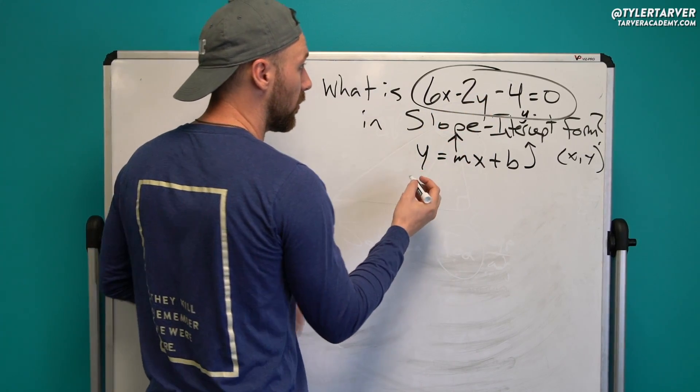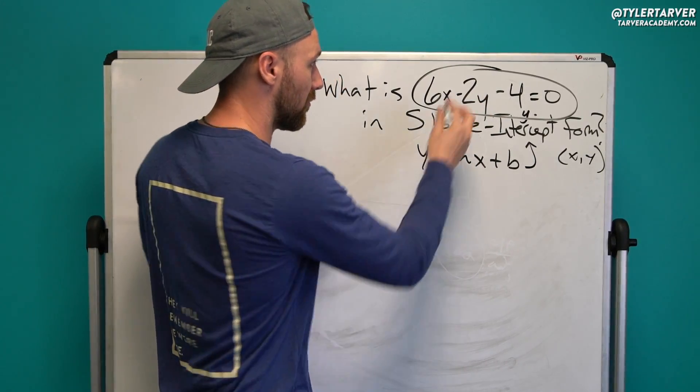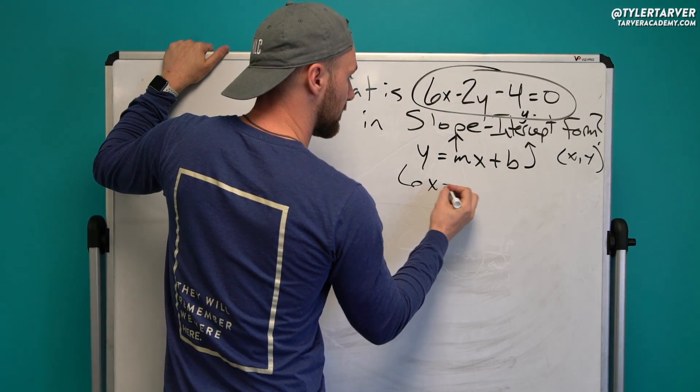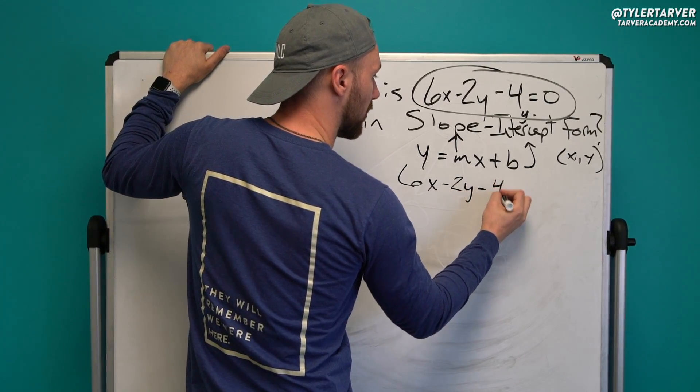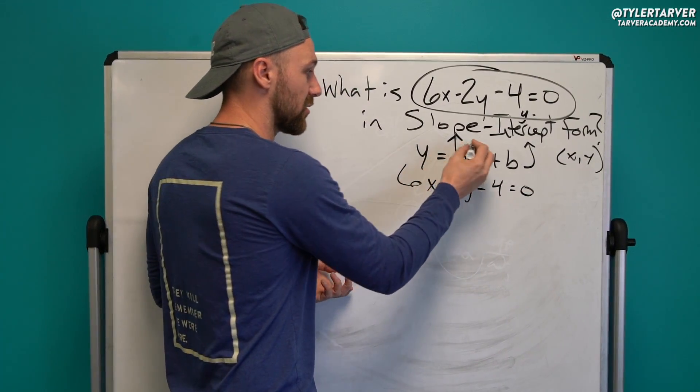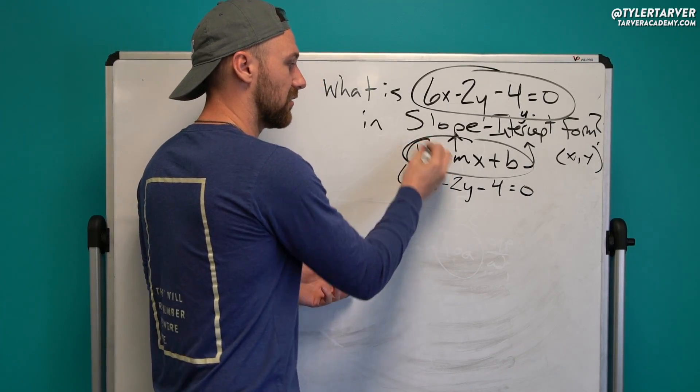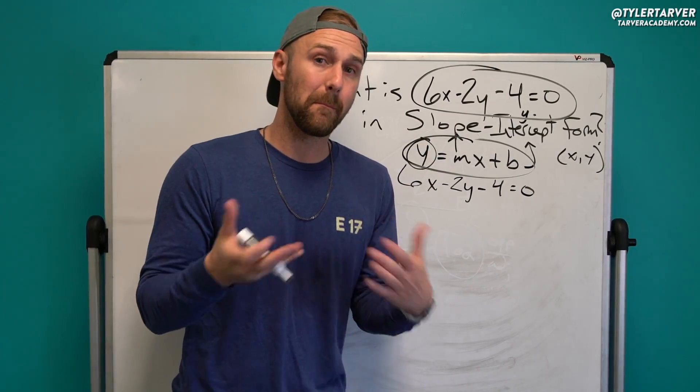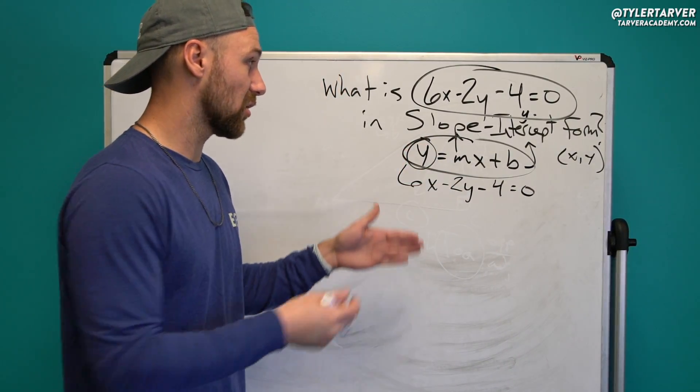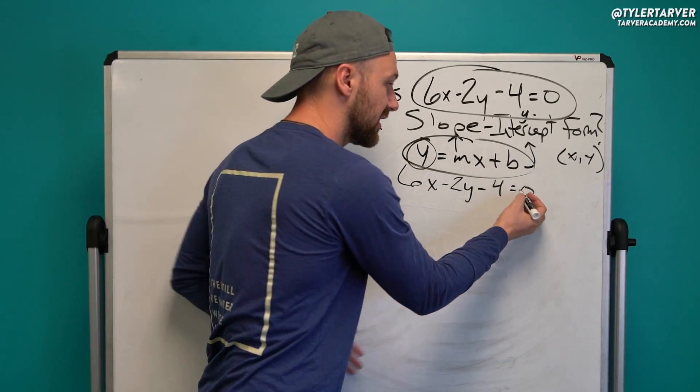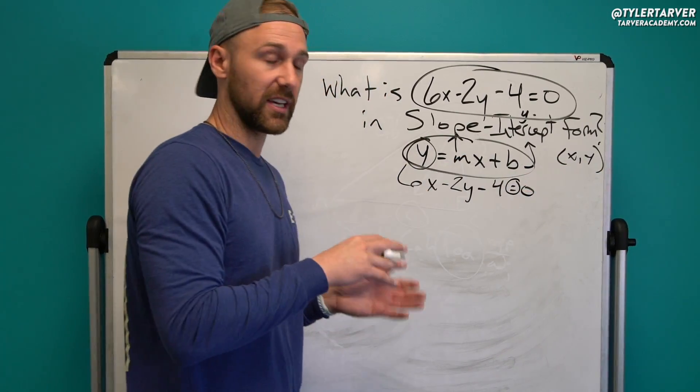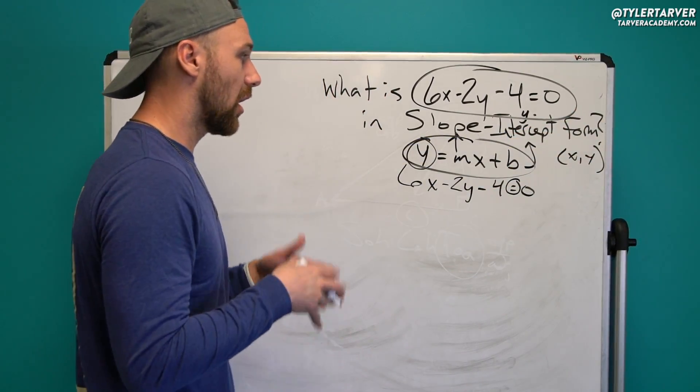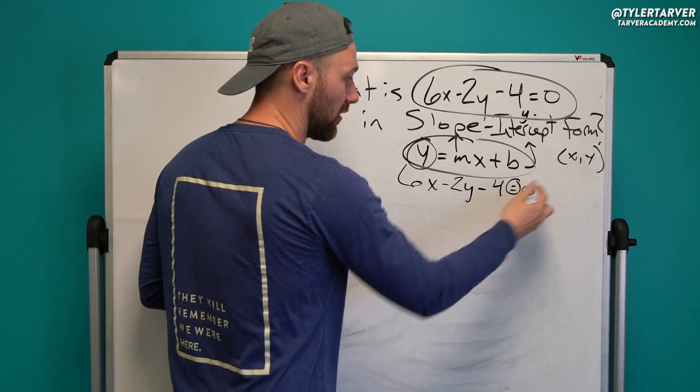So I'm going to rewrite the equation right here. We've got 6x minus 2y minus 4 equals 0. Now in this equation, y needs to be by itself in the final form. So I want to get y by itself in this equation. Pretty much I'm moving everything to the other side of that equals sign. I'm going to start with the easiest stuff. I'm going to get the 4 over there.